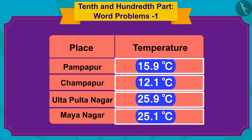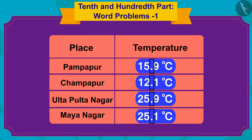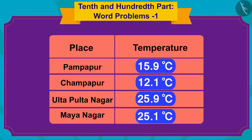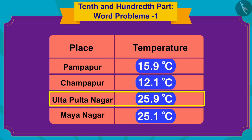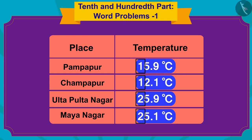Children, whenever we want to compare numbers written in decimal, we will compare the numbers written to the left of the decimal point first, and then compare the numbers written on the right, or the tenth place. Like here, first we will compare the numbers written in the tens place of all these temperatures.